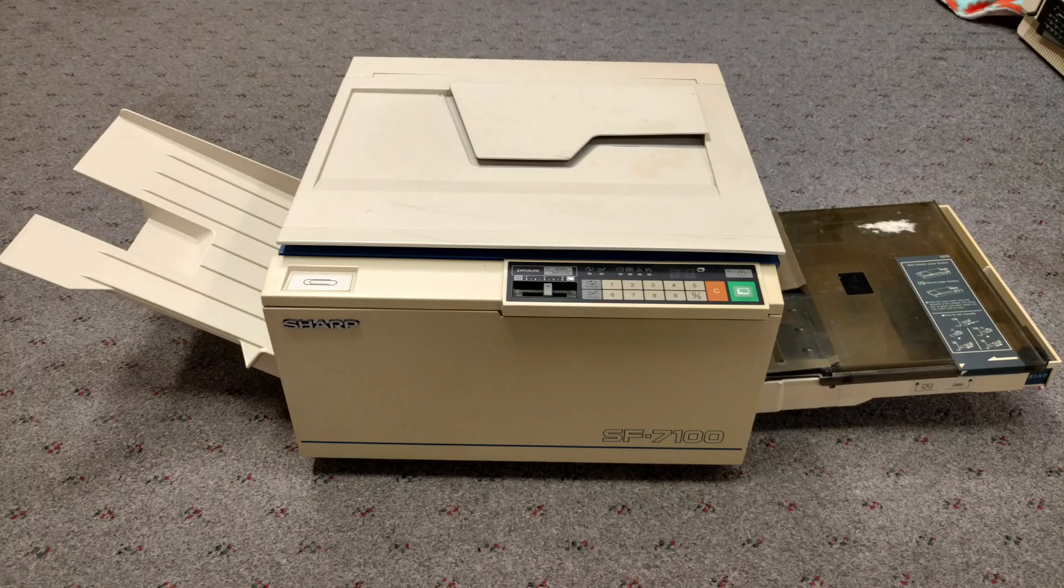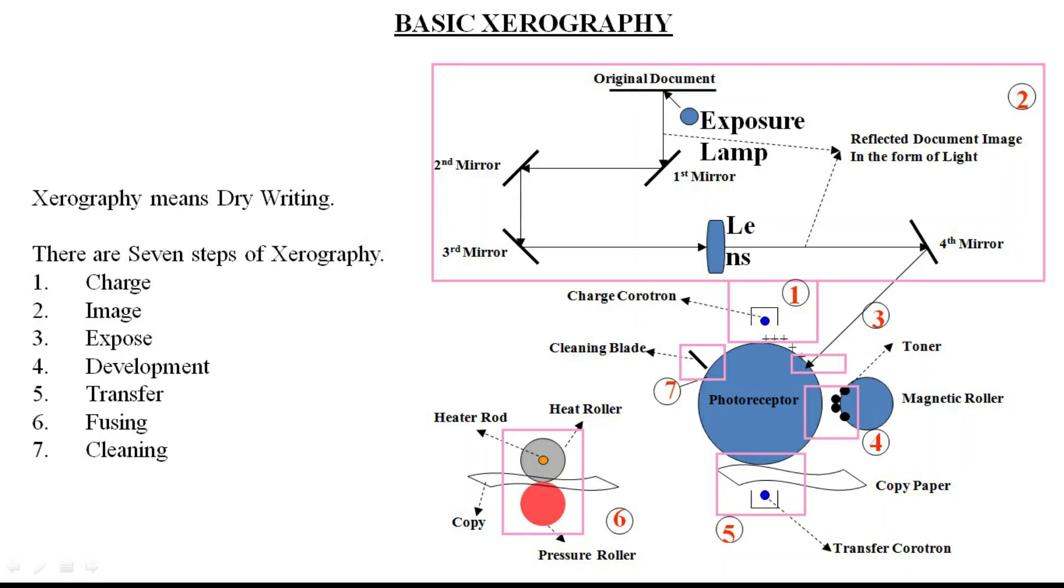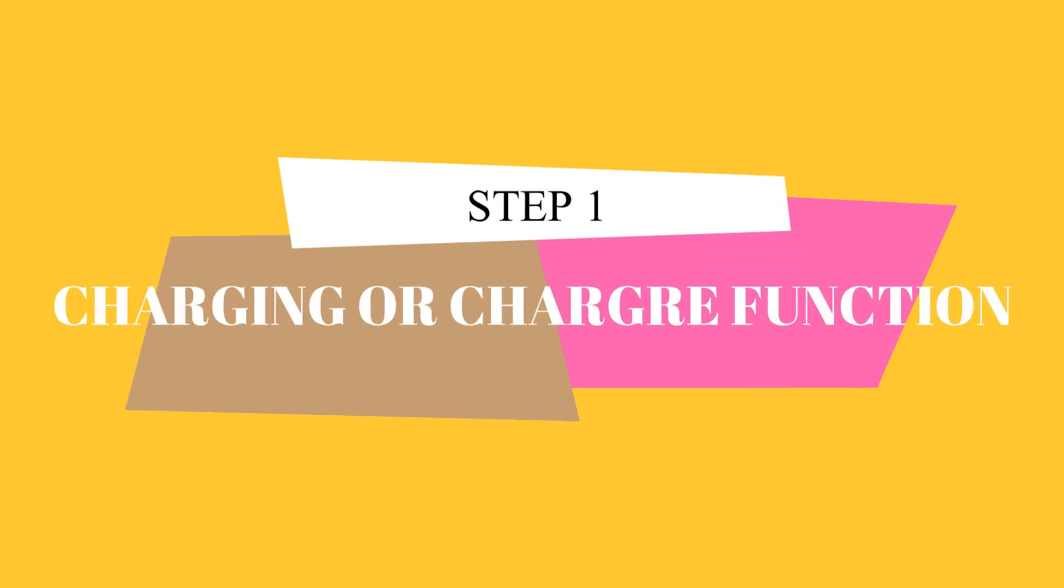Now we will learn about the seven steps. Step one: charging. In this step, the photoreceptor drum is uniformly charged with positive charge.